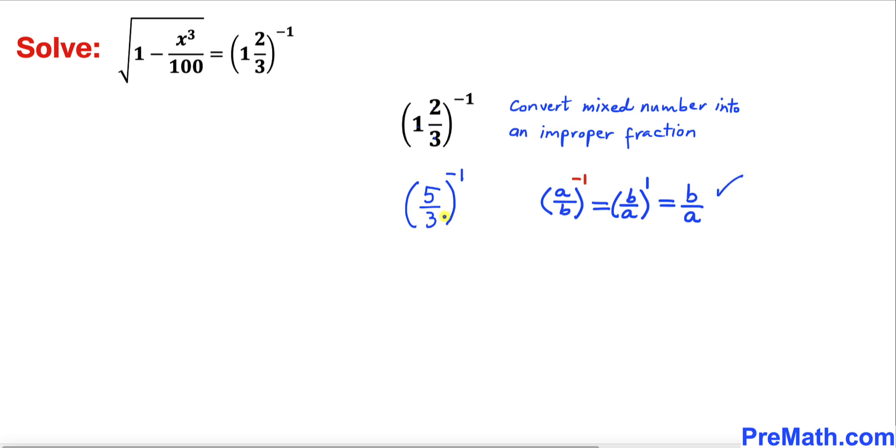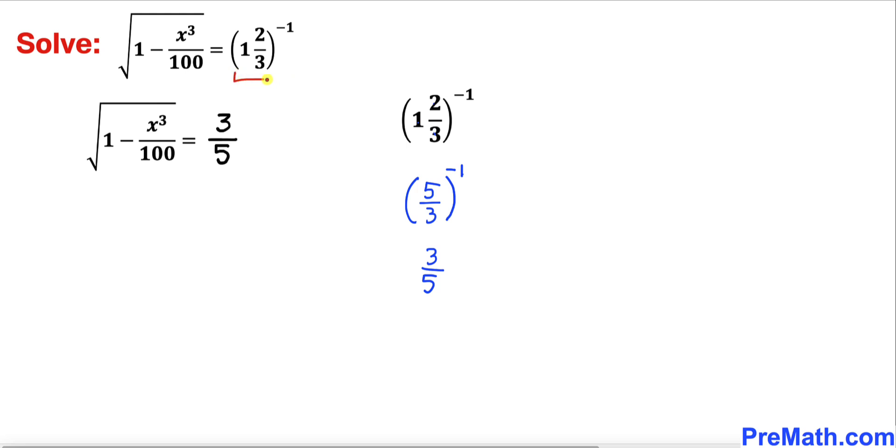Now let's use this basic rule. This fraction with negative power could be written as 3 divided by 5. Here I have replaced the right hand side by this simplified form.